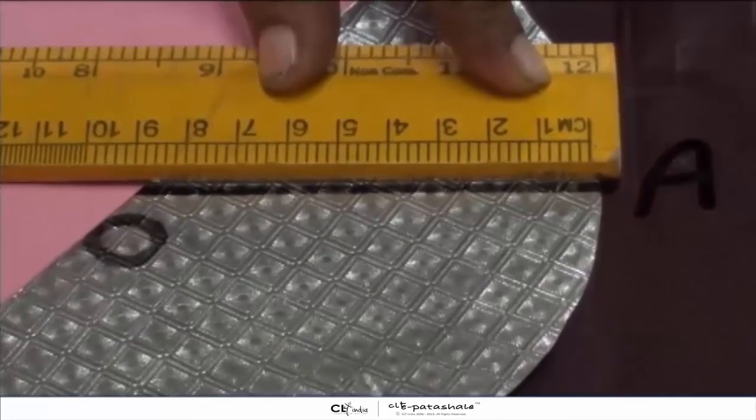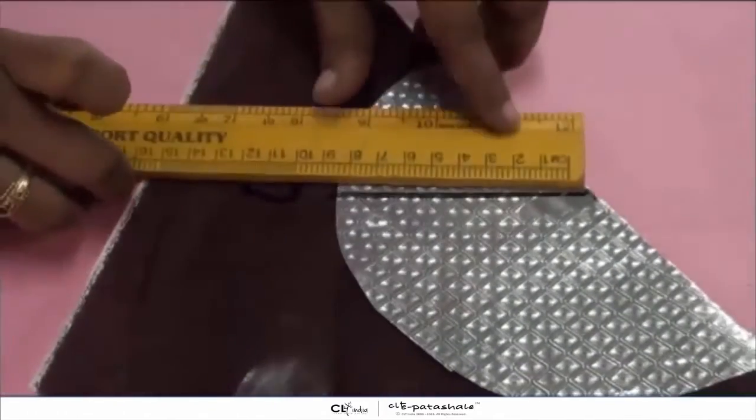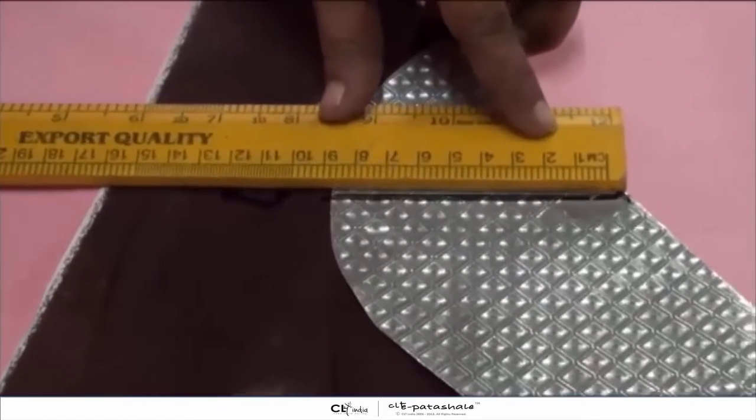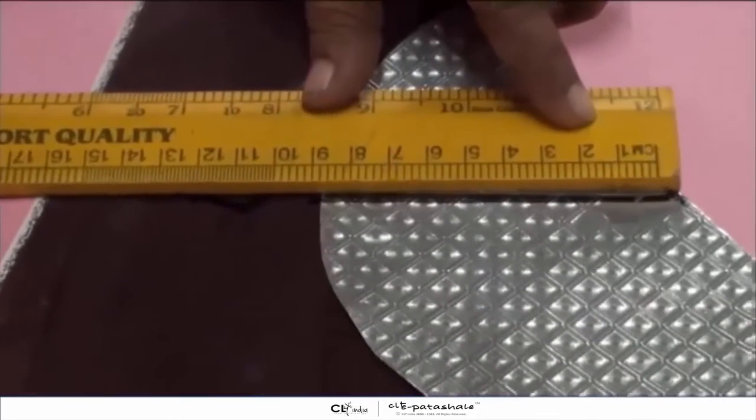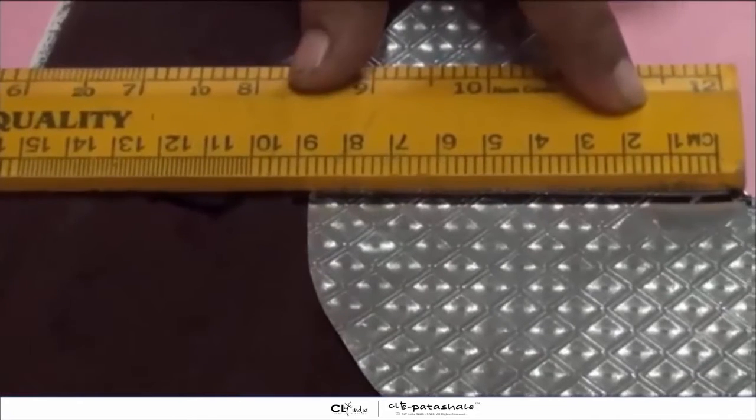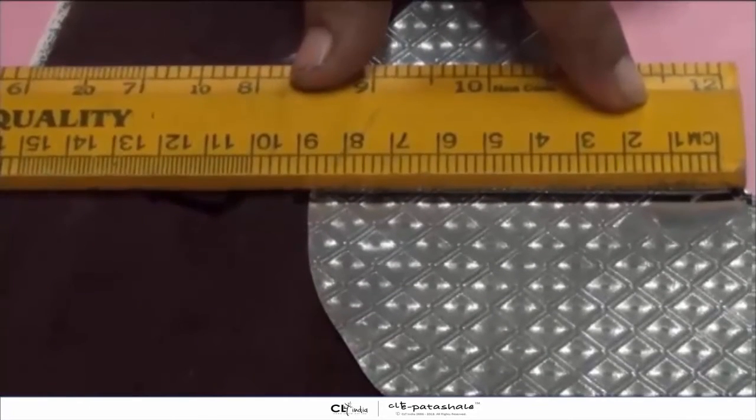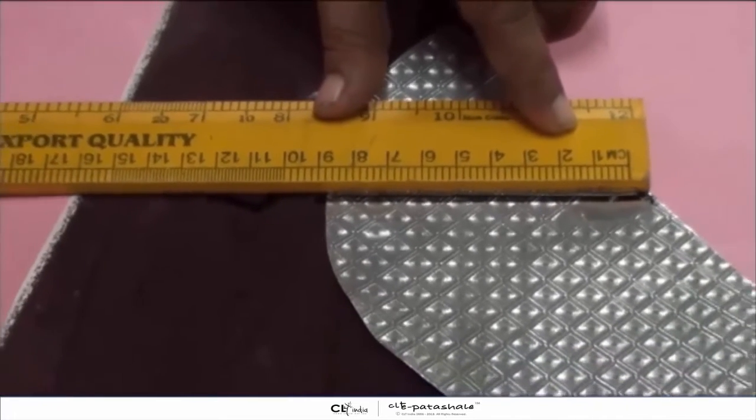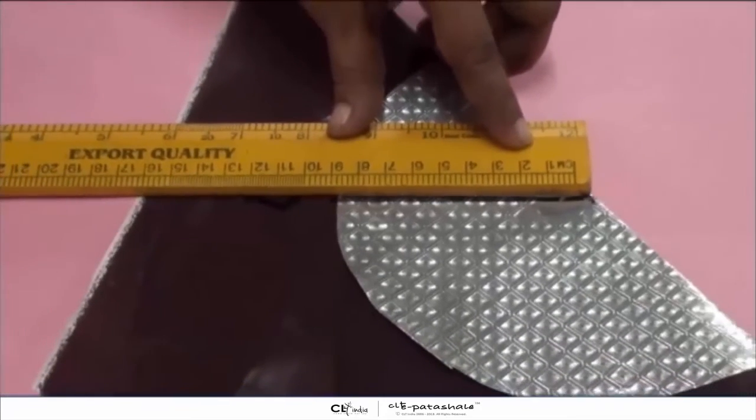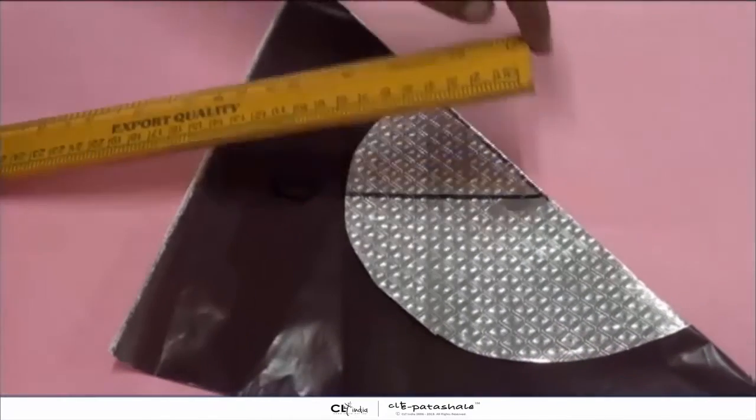Now what do we do next? We will now measure the length of OB. Now carefully measure the length of OB. It is also equal to 9 cm. So therefore we can say that length of OA is equal to length of OB.